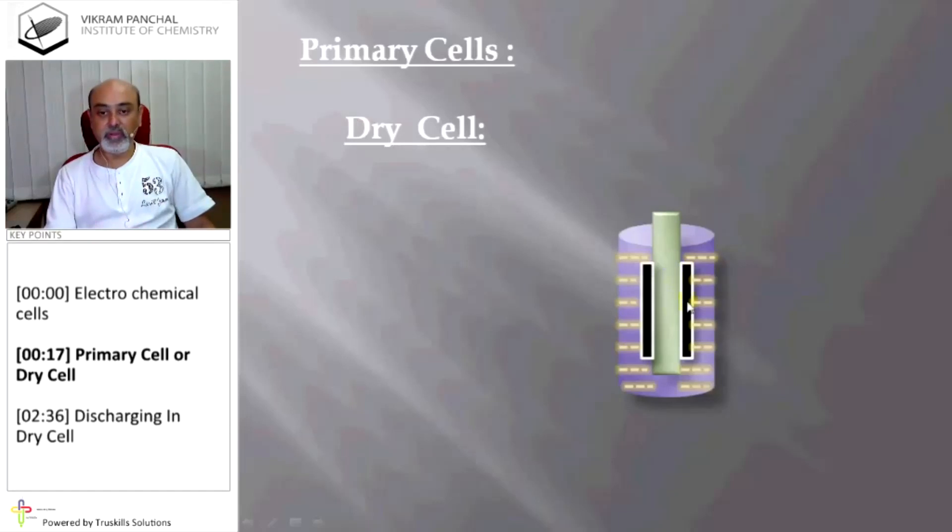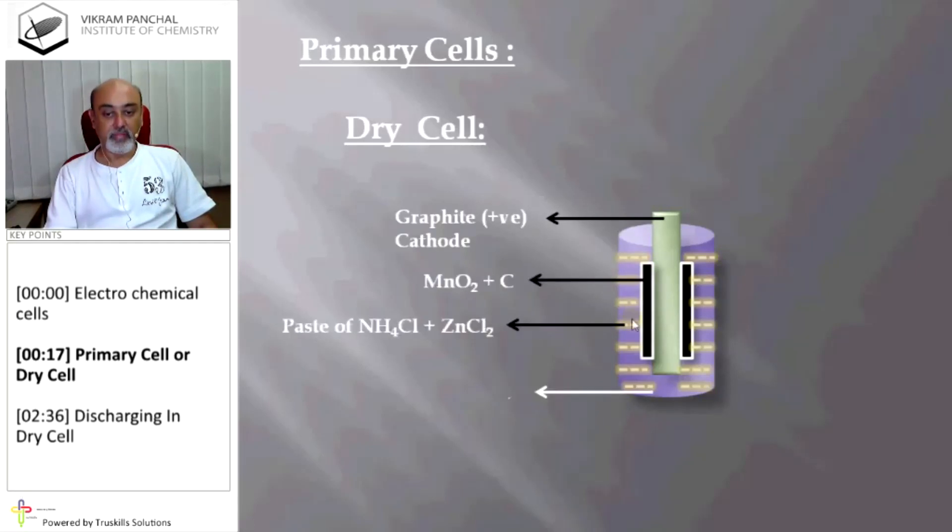We are using in our day-to-day life this one where this container is of zinc which is anode. This rod in the middle is a graphite rod. Near the graphite rod you will find first layer which is of manganese dioxide and carbon graphite, and then there will be a paste of ammonium chloride and zinc chloride.